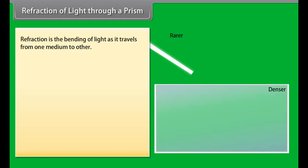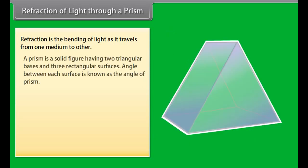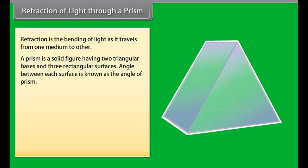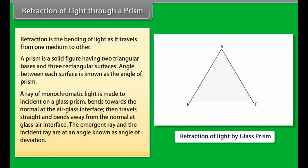Refraction is the bending of light as it travels from one medium to other. A prism is a solid figure having two triangular bases and three rectangular surfaces. Angle between each surface is known as the angle of prism. A ray of monochromatic light is made to incident on a glass prism, bends towards the normal at the air-glass interface, then travels straight and bends away from the normal at glass-air interface. The emergent ray and the incident ray are at an angle known as angle of deviation.